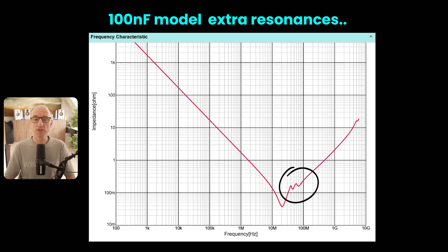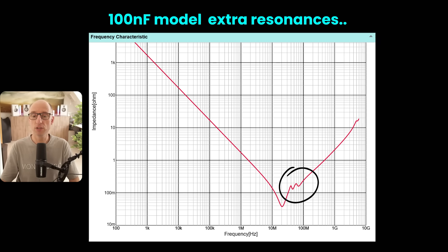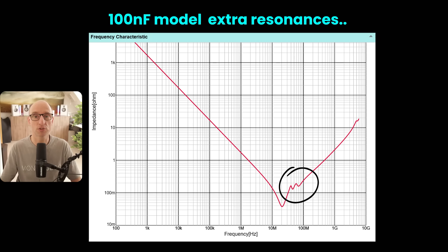One thing to keep in mind is that this is a very simplified model. If you look at a 100 nF capacitor, for instance, you see multiple resonances. The model only has a single resonance, so it's not super accurate. It is, however, good enough to get an insight into the behavior of decoupling networks.